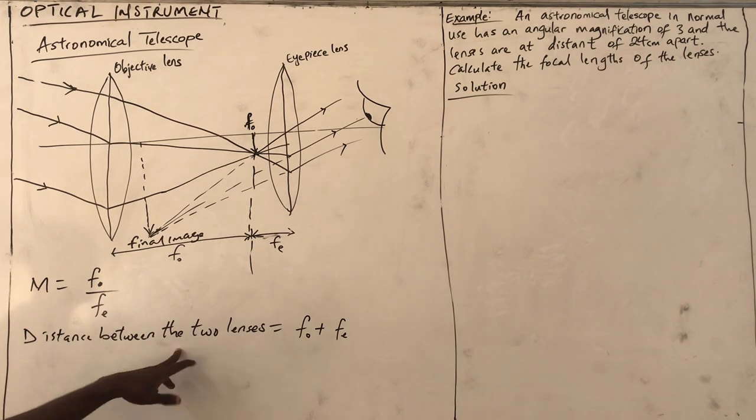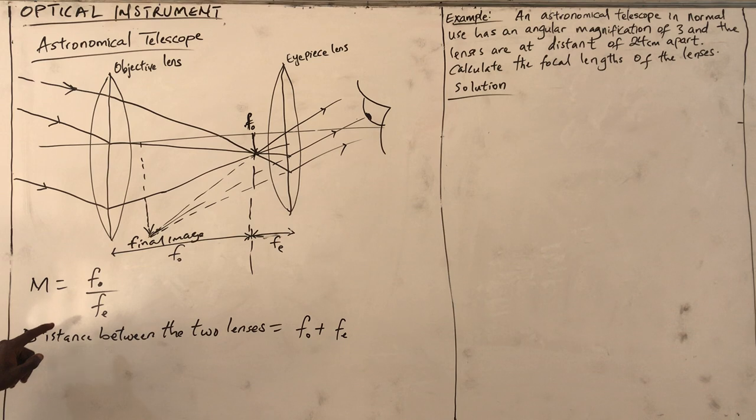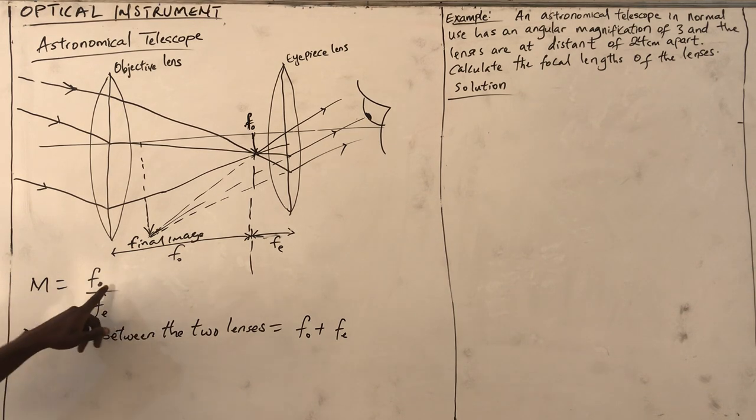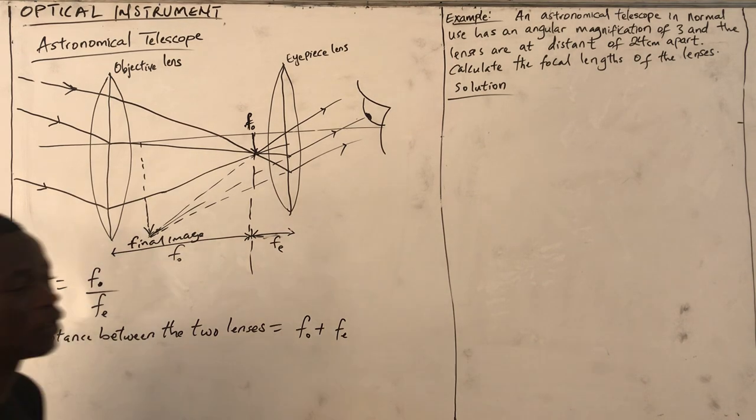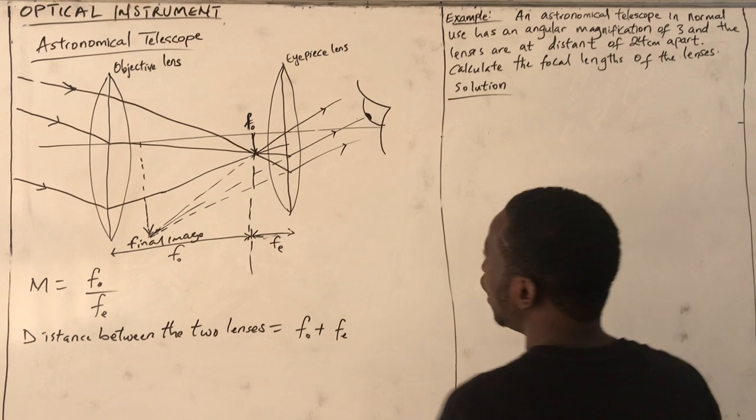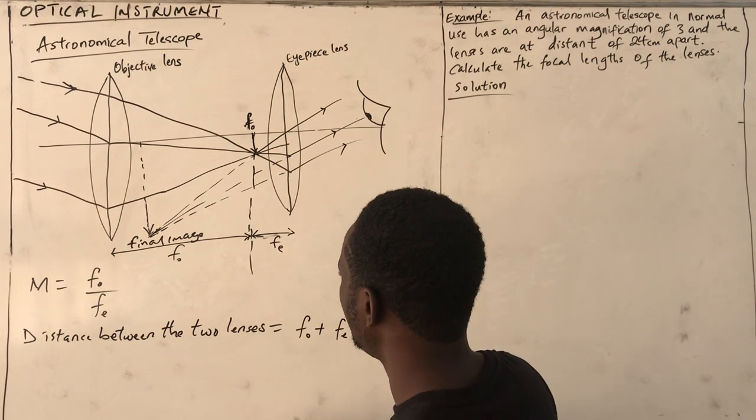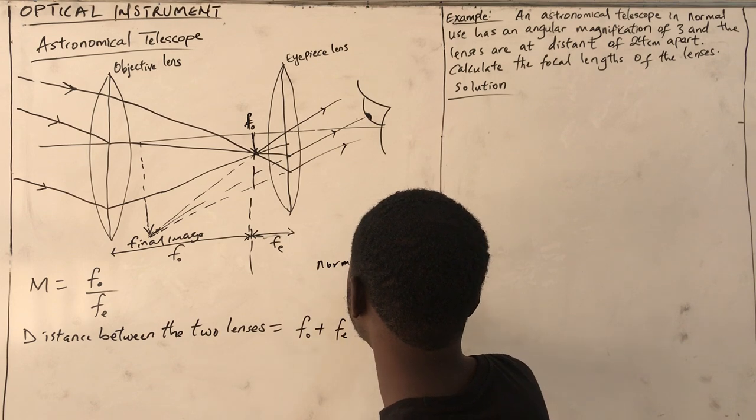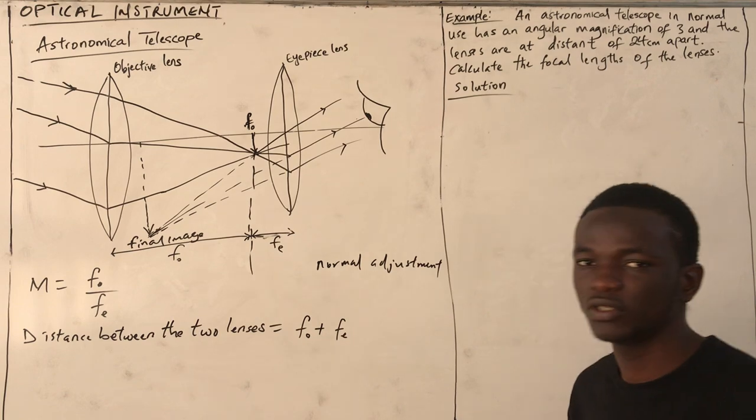The distance between the two lenses is given by this. The angular magnification is given by the focal length of the objective lens over the focal length of the eyepiece. This condition is used when we have normal adjustment.